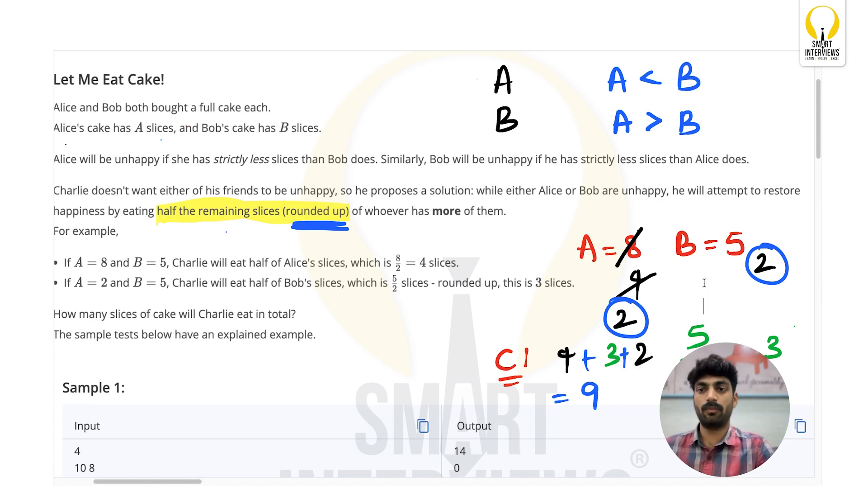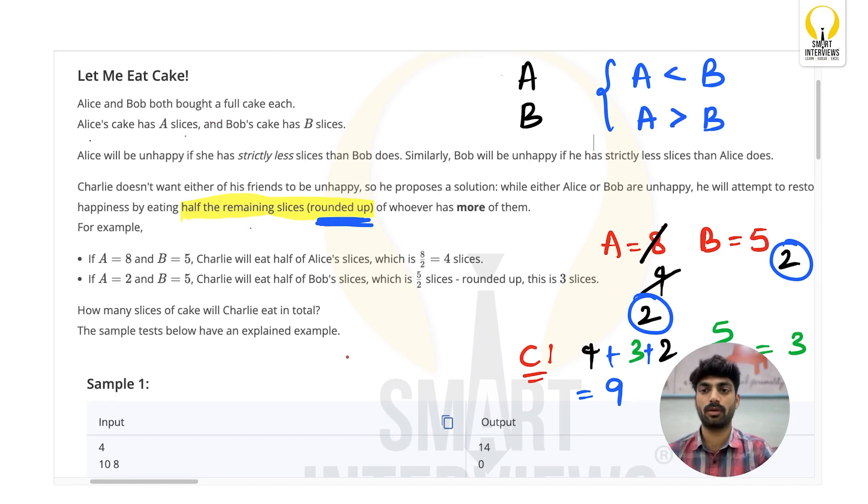So now we stopped because both of them are happy because these are equal, neither of these two conditions are satisfying. If you see, the problem is simply an implementation based problem. You are just given A and B. Simply you will run a loop until A is not equal to B. In that loop you will simply check these two conditions, if either of them is unhappy, from the person who has more number of cakes Charlie will try to eat half of it.